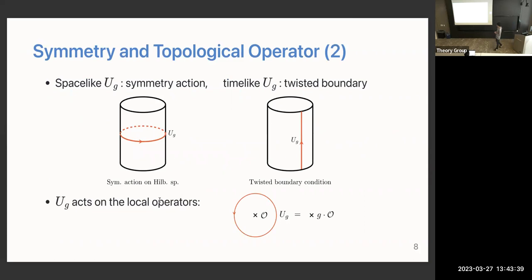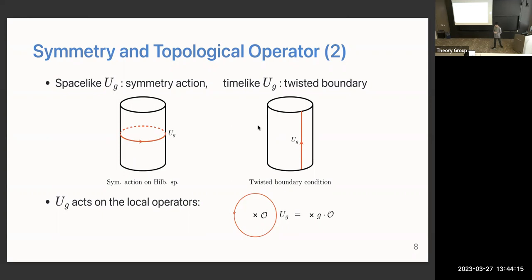This topological operator is convenient because it can implement various operations associated with symmetry. The most basic is the symmetry action on Hilbert space, done by a spacelike topological operator. You can also define twisted boundary conditions by inserting this operator in a timelike way. If it encircles a local operator, you can shrink this topological surface down onto the local operator, implementing the symmetry action on that local operator.